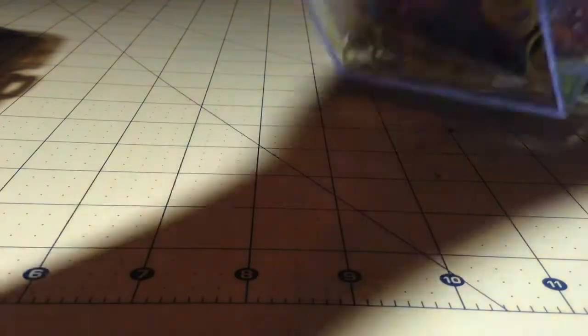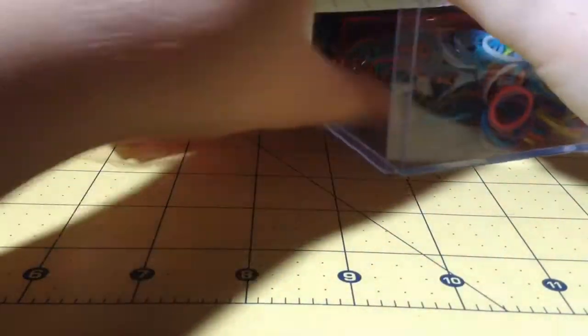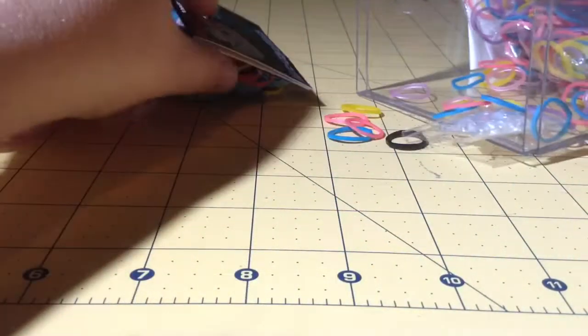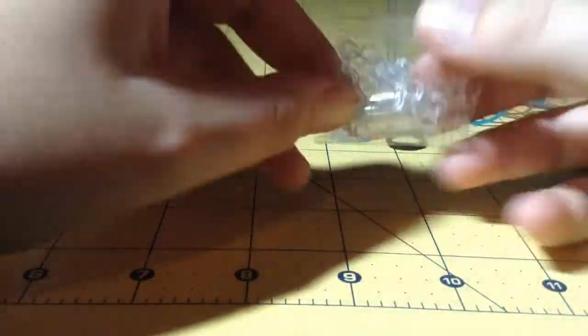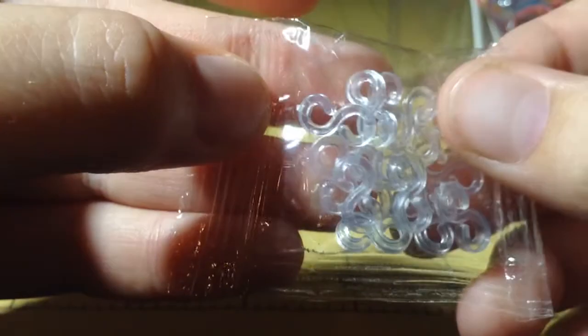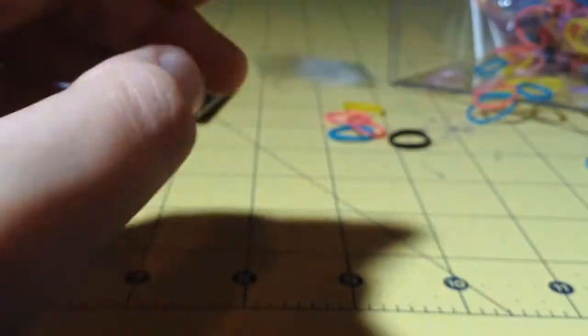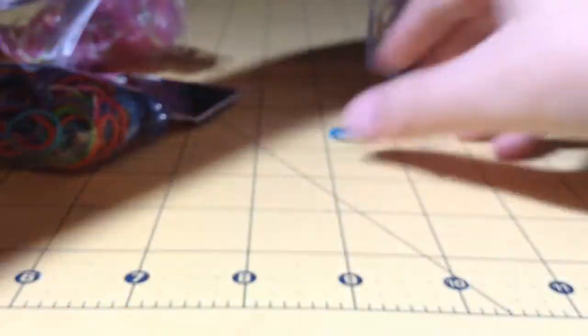So the supplies you're going to need is a rubber band of some type, any color or anything, and you can get the packs pretty much everywhere sells them now. You're also going to need something to seal your rubber bands off with. Any pack you buy will come with either an S-clip or a C-clip. So you're going to need those.